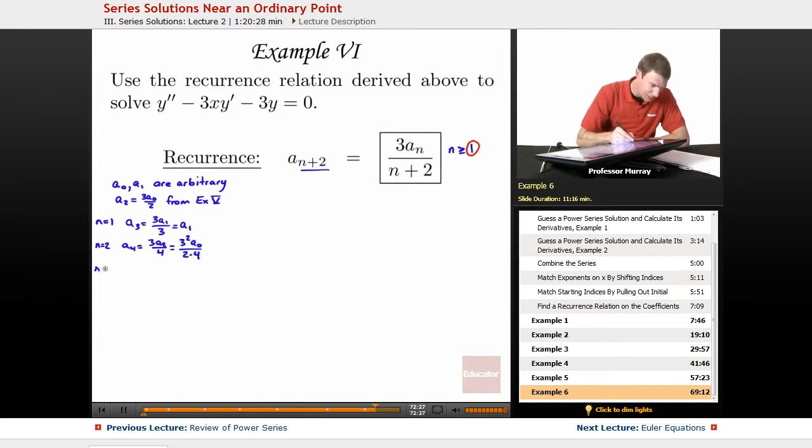From N equals 3, I get my A5 is going to be 3A3 over 5, which in terms of A1 is 3A1 over 5. That's coming up from here, when we figured out A3 in terms of A1.